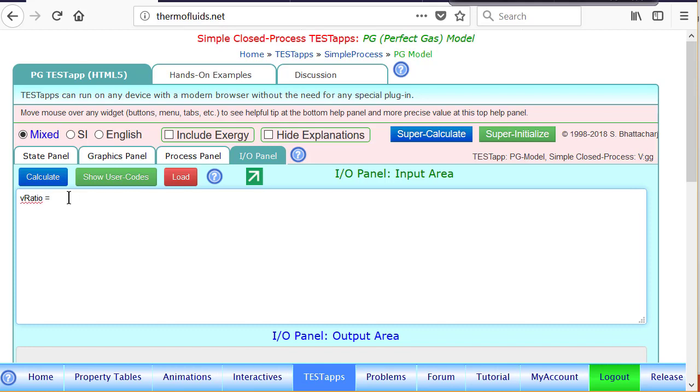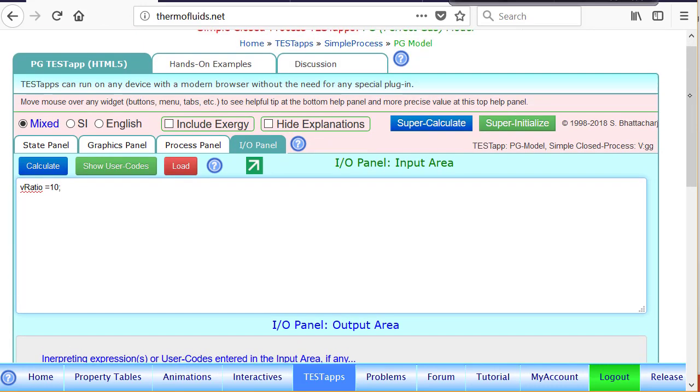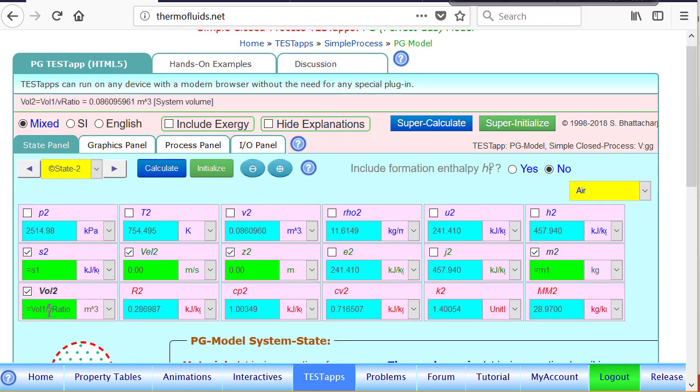We could have done it earlier—in that case, we would not see that error. It's 10. Now if I calculate, that means I registered this value. If I go back to state, now if I do a calculator, you'll notice this is recognized. If I put the pointer over, you can see the new volume is calculated and displayed at the top help panel when you put the mouse over volume 2.